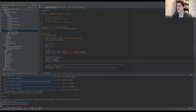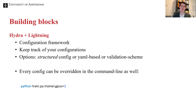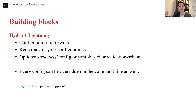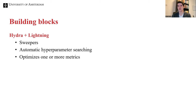Every one of these configurations can be overridden on the command line, which is very convenient. For example, you can call train.py and specify train.gpus=1 — then whatever was in the original structured config will be overridden by that command line argument.